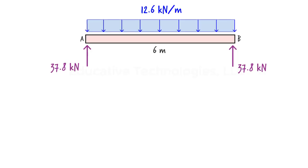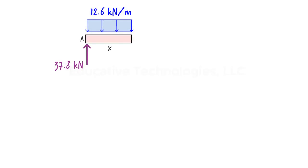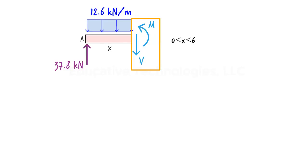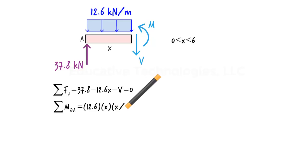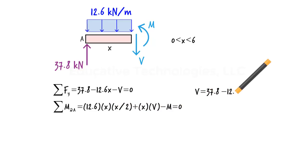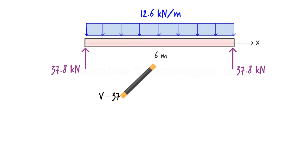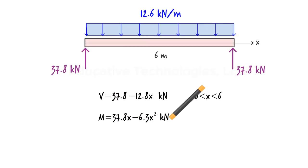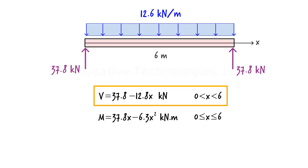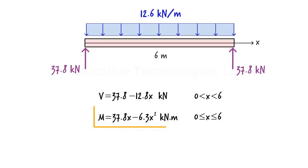To write the equations, we cut the beam at an arbitrary point, letting x represent the length from the left end to the cut point, where x varies from 0 to 6. Using v and m for shear and moment at the cut point, we write and solve the two equilibrium equations to get the shear and moment equations. Just like the previous case, the shear equation does not cover the endpoints of the beam where the support reactions are located, while the moment equation is valid for the entire beam including its endpoints.